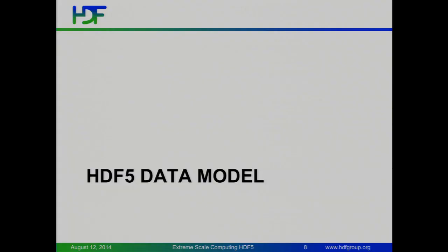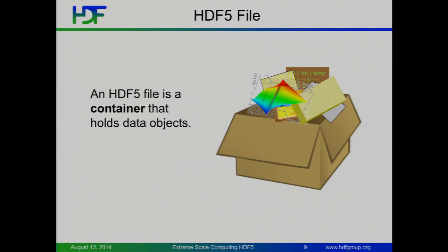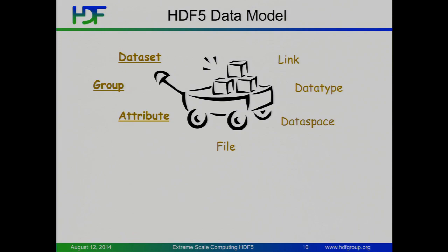Starting at the high level, the highest level of HDF5 is the data model. Fundamentally, the file is just a container that holds these data objects. There are various components — various building blocks. The primary ones are datasets, groups, and attributes. Supporting ones include links, data types, and data spaces. They all get stored in a file as a container, and these are the objects you deal with when you work with HDF5.